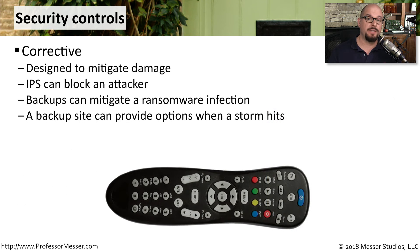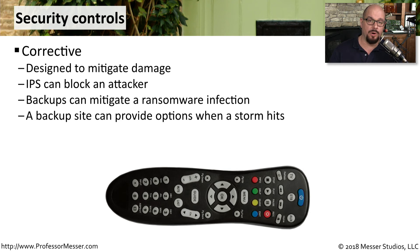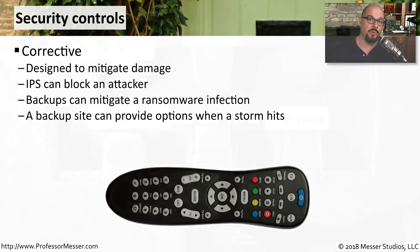A corrective security control is designed to mitigate any damage that may be created by an attack. For example, an IPS is a good way to block an attack as the attack is occurring across our network. If someone is using ransomware to encrypt our files, we can correct that by using our backups to restore the files back to their original form.